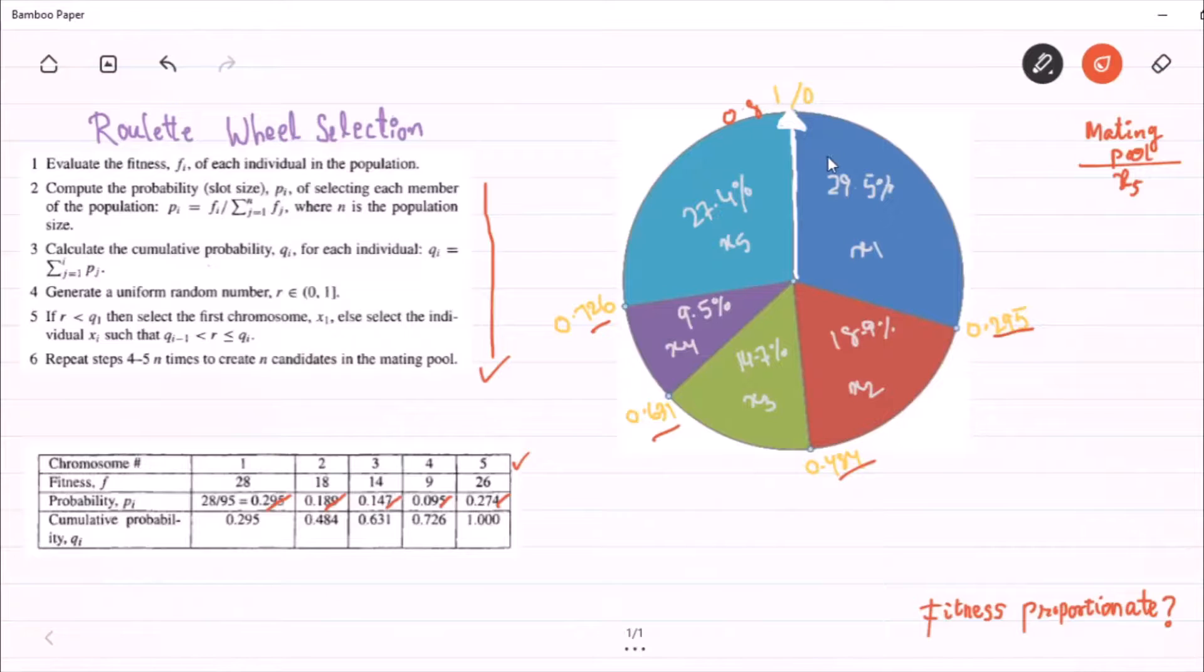And when the wheel stops, if the pointer points to a value called 0.18, then we can take x1 into the mating pool. Now, whether my algorithm stopped? I mean, whether my algorithm is terminated? Not yet.